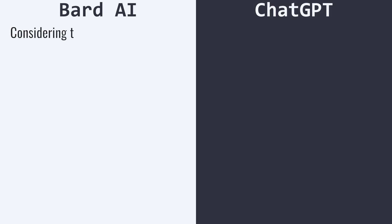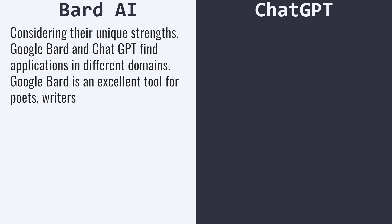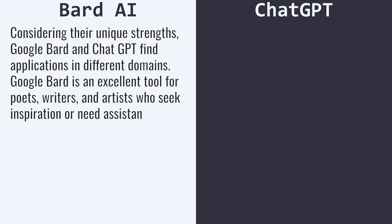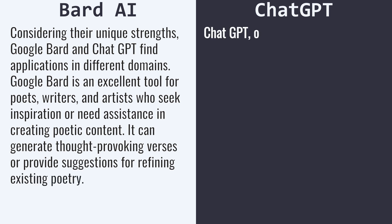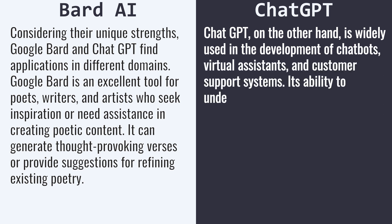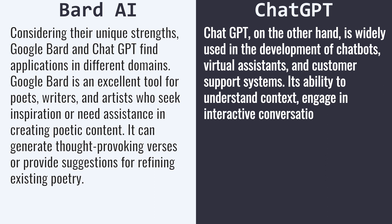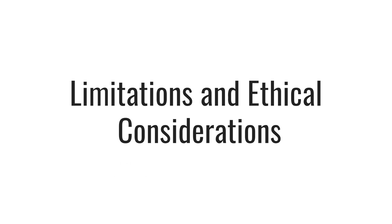Use cases. Considering their unique strengths, Google Bard and ChatGPT find applications in different domains. Google Bard is an excellent tool for poets, writers, and artists who seek inspiration or need assistance in creating poetic content — it can generate thought-provoking verses or provide suggestions for refining existing poetry. ChatGPT, on the other hand, is widely used in the development of chatbots, virtual assistants, and customer support systems. Its ability to understand context, engage in interactive conversations, and provide relevant responses makes it an invaluable tool for enhancing user experiences.